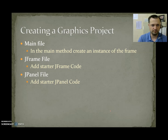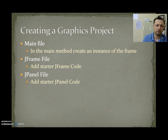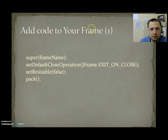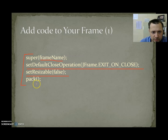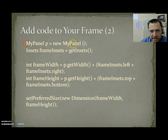Creating a graphics project: In the main file, you create an instance of a frame. In the JFrame file, you add starter code; in the JPanel file, you also add starter code. In your JFrame constructor, add super("window name"), set your close operation to exit on close, make it non-resizable, and call pack() so the window gets created. Then create your panel.